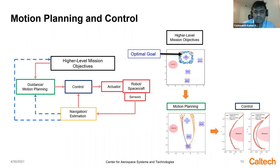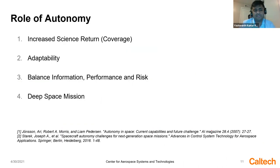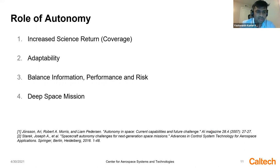Analogously to a ground robot, high-level objectives include selecting an optimal terminal condition and designing a smooth trajectory from wherever you are to that terminal state, while the control algorithm tracks that trajectory. With autonomy incorporated, we should get higher science return and ensure the system is adaptable — for example, if there is structural failure on the target spacecraft, the system must design new orbits online and balance information performance and risk.